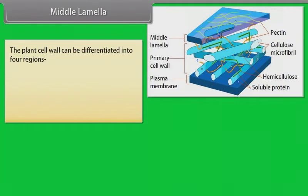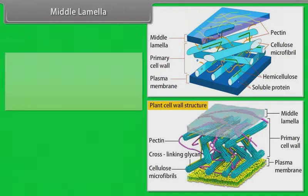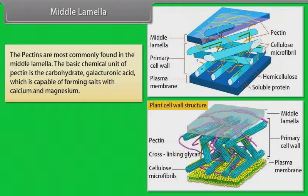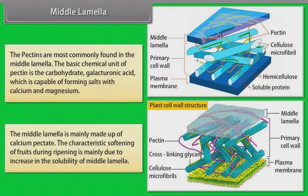Middle lamella. The plant cell wall can be differentiated into four regions: middle lamella, primary wall, secondary wall, and tertiary wall. The outermost layer of the cell wall, or the intercellular structure separating the walls of two adjacent plant cells, is the middle lamella. Pectins are most commonly found in the middle lamella. The basic chemical unit of pectin is the carbohydrate galacturonic acid, which is capable of forming salts with calcium and magnesium. The middle lamella is mainly made up of calcium pectate. The characteristic softening of fruits during ripening is mainly due to increase in the solubility of the middle lamella.